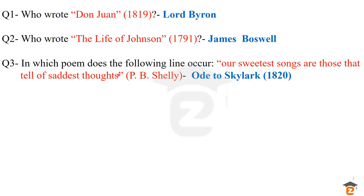Question number 3: in which poem does the following line occur — 'Our sweetest songs are those that tell of saddest thoughts'? This line was written by P.B. Shelley, who was a romantic poet also known as the revolutionary poet. This famous line of English Literature was taken from the poem Ode to a Skylark, which was published in 1820 and composed by P.B. Shelley.